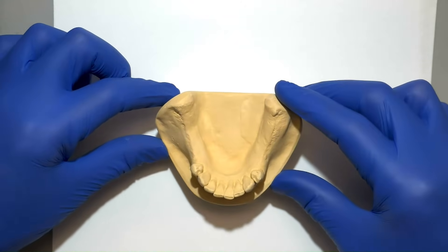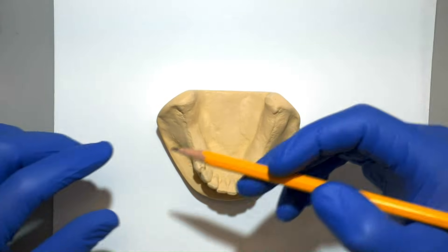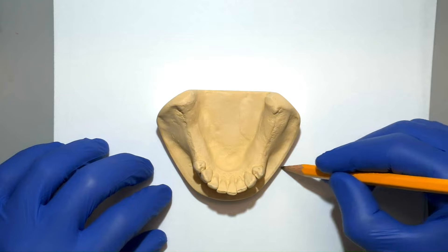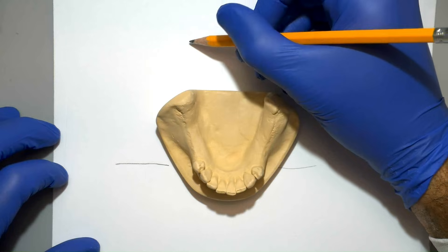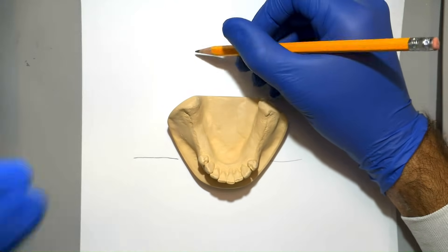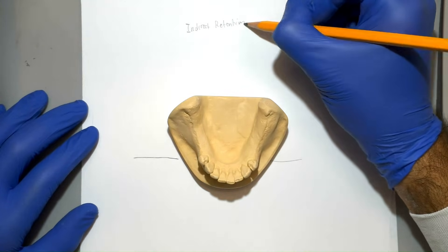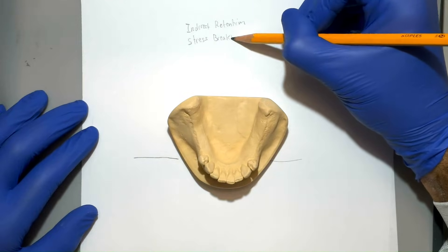As we look at this case, we notice that it's a class 1 RPD, meaning there is a fulcrum line that goes between the most distal abutments, right around here, which means that we will need to include indirect retainers usually placed as perpendicular and as far away as possible from the fulcrum line. In this case, those will most likely be the canine teeth, and we also need to include stress-breaking clasps.